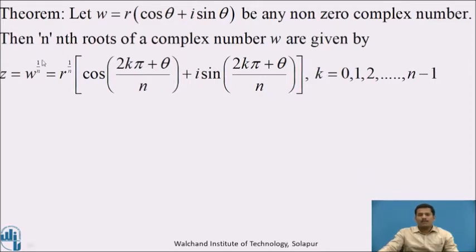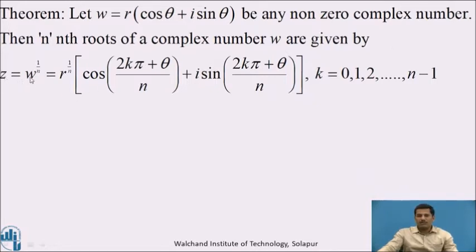Let us start this lecture with a theorem. Let W = R(cos θ + i sin θ) be any non-zero complex number given in polar form. Then the nth roots of W are given by Z = W^(1/n) = R^(1/n) [cos((2kπ + θ)/n) + i sin((2kπ + θ)/n)], where k = 0, 1, 2, ..., n−1.